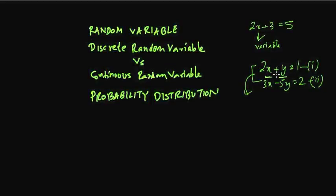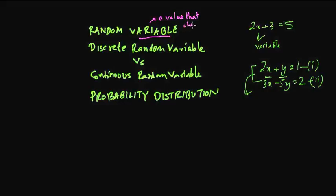A variable is something that is unknown and we need to find it. But when we talk about a random variable, we don't have to find anything. It is a value that changes — it can have many values, but we don't need to solve for it. When a value does not change, it is a fixed constant, like 3 or 5. A value that changes is a variable.